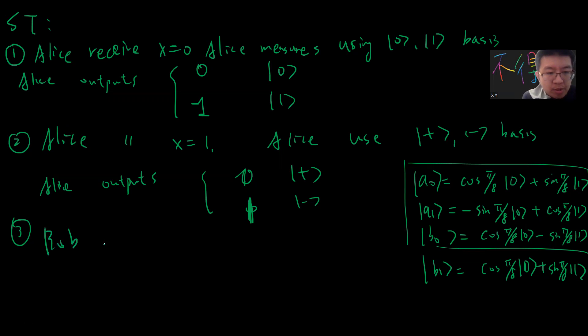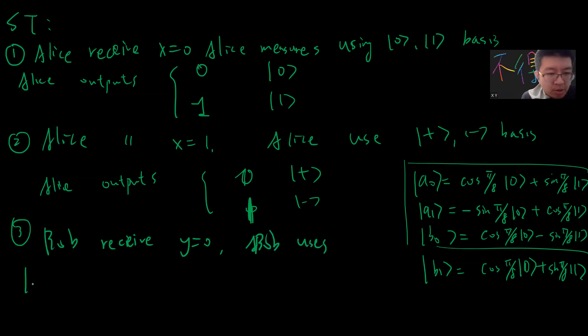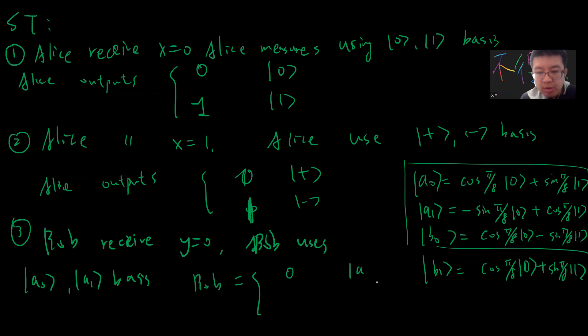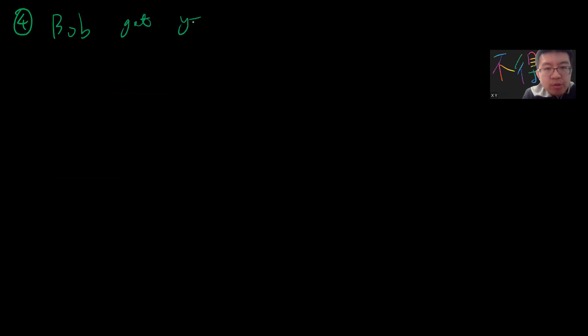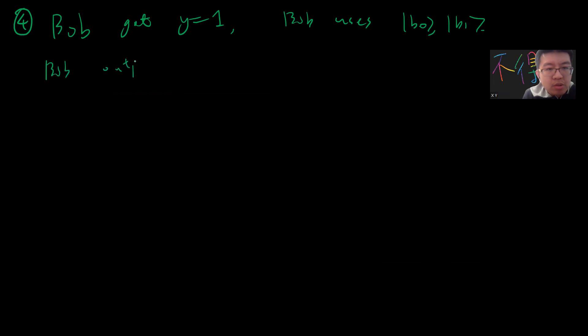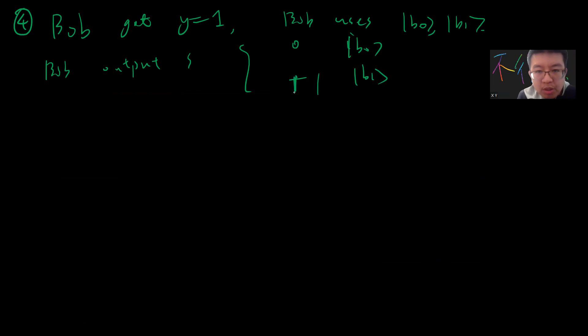Bob's strategy: if Bob receives y = 0, he measures in the {|a0⟩, |a1⟩} basis. He outputs 0 if he gets |a0⟩, and outputs 1 if he gets |a1⟩. If Bob receives y = 1, he measures in the {|b0⟩, |b1⟩} basis. He outputs 0 if he gets |b0⟩, and outputs 1 if he gets |b1⟩.